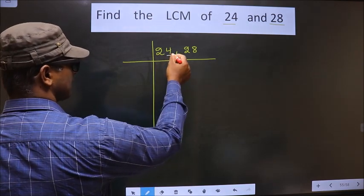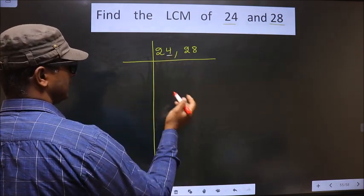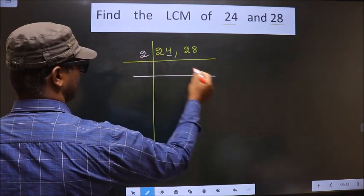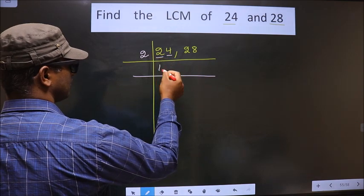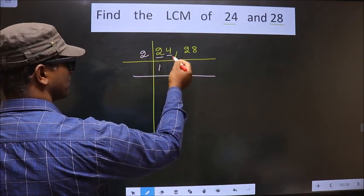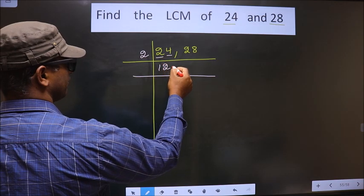In this number, last digit is 4, which is even, so we take 2 here. Now, first number is 2. When do we get 2 in 2 table? 2 times 1 is 2. Next number is 4. When do we get 4 in 2 table? 2 times 2 is 4.